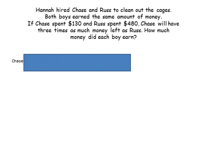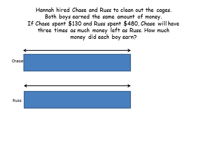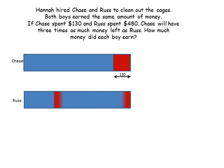So we have Chase — he earned this much money, and Russ also earned the same amount, so you can see they're the same length. Chase spent $130 and Russ spent $480. After they spent that money, Russ would only have one box — the dark blue box — that's what's left of his money. And that is one third of Chase's remainder, or Chase would have three times as much as that.